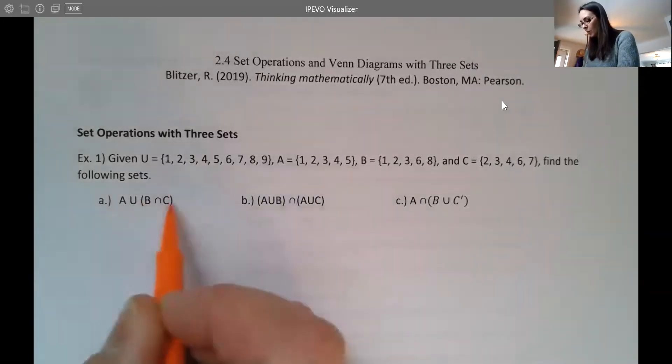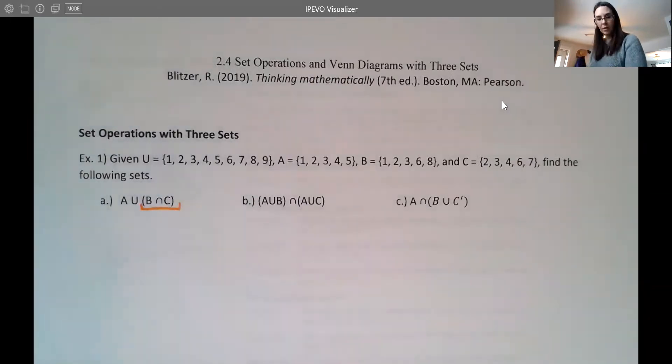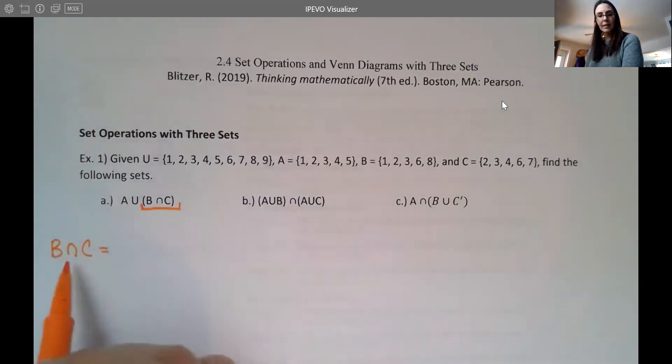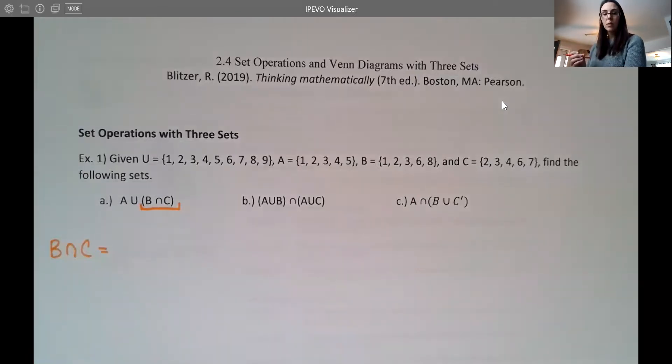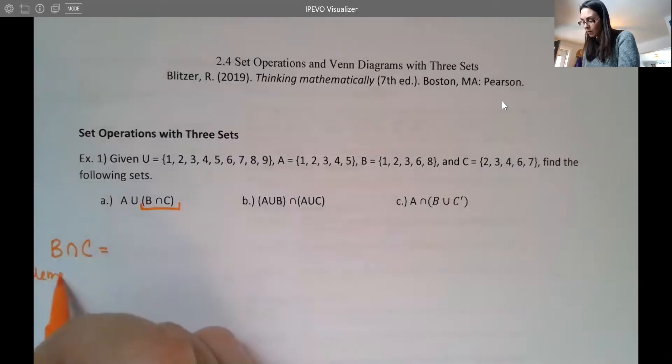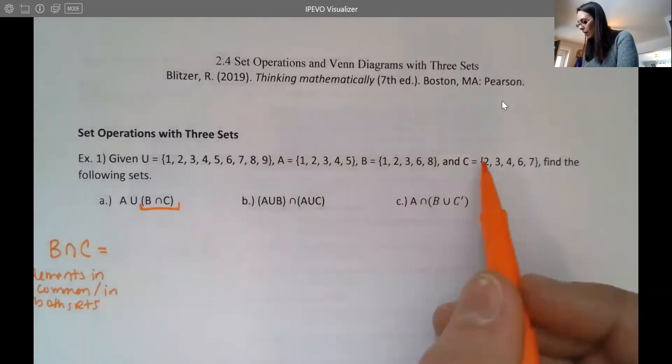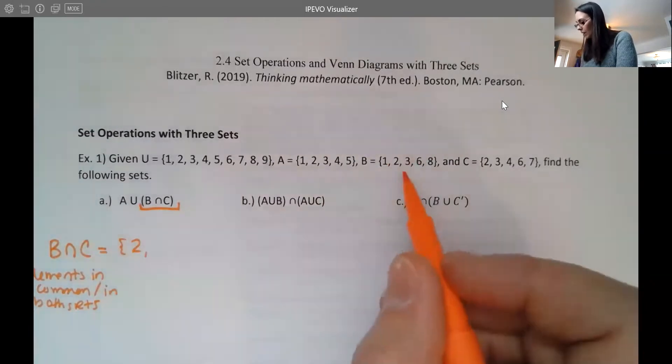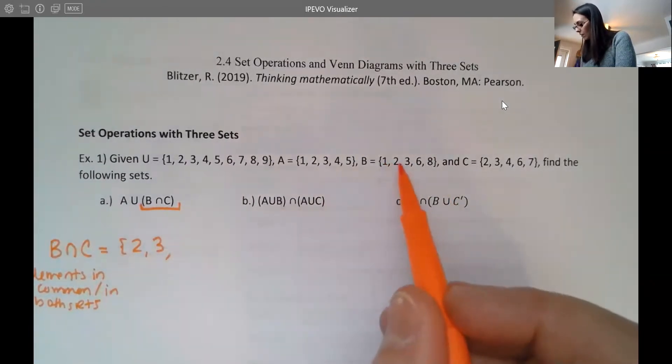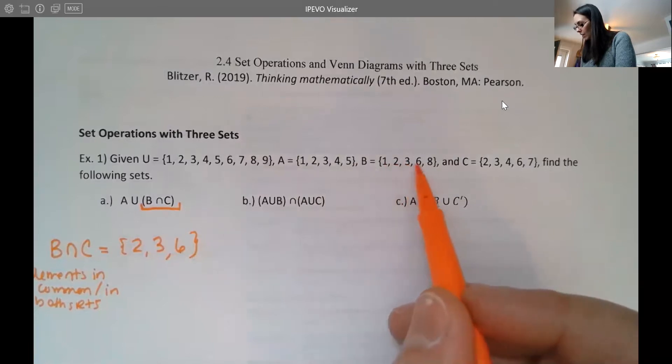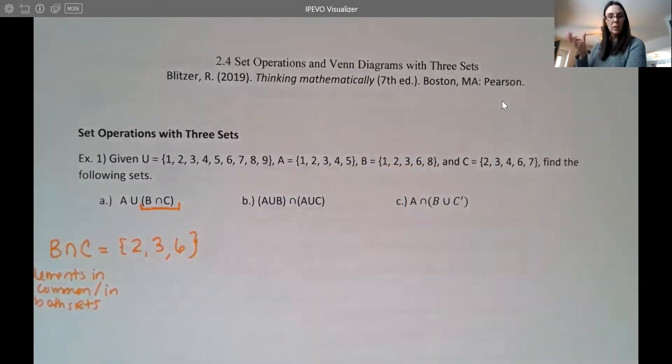So in the first example here, I do see parentheses. So I'm going to start with this piece right here first and find what B intersect C is. So remember when B intersect C, we're looking for numbers they have in common so that they're in both sets. These are your elements in common or in both sets. So if I look at B and C, I want to say, well, what elements do they have in common? I see they have the number two in common. They have the number three in common. They have the number six in common and that looks like it.